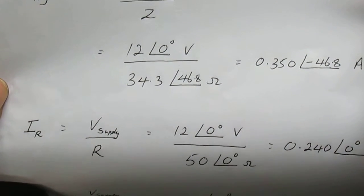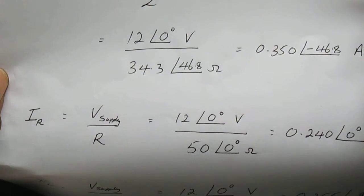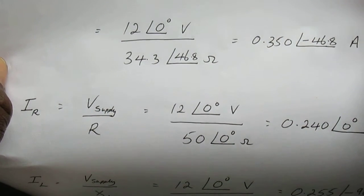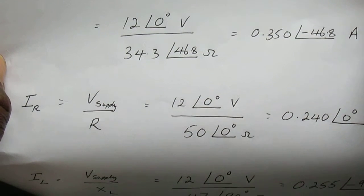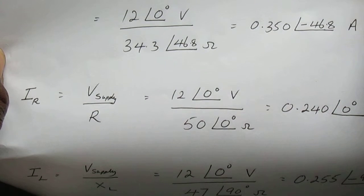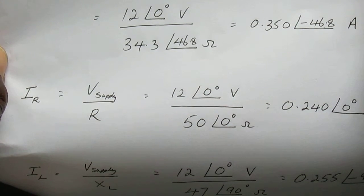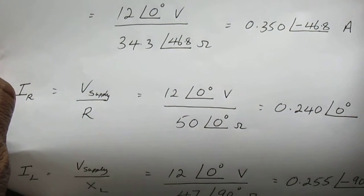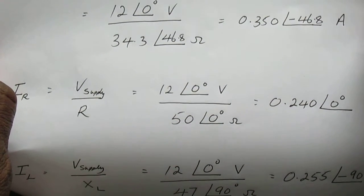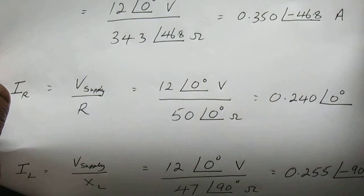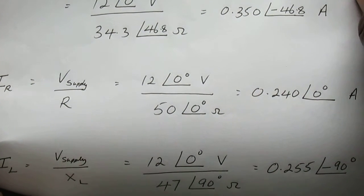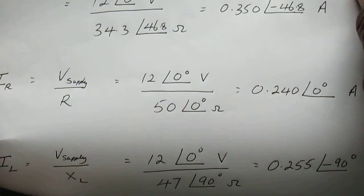The current through the resistor is the voltage supply divided by the resistance, which is 12 angle 0 volts divided by 50 angle 0 ohms. Remember that the phase relationship for the resistor is angle 0, and this gives 0.24 angle 0 degree amps.